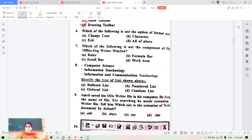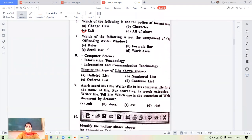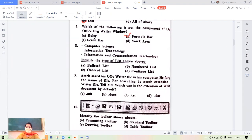Which of the following is not the option of format menu? Change case and character both are under the format menu. Exit is in file menu, so this is incorrect. Which of the following is not the component of OpenOffice Writer window? Formula bar is of Calc part. You have to identify the type of list. Which type of list is this? Bulleted list.